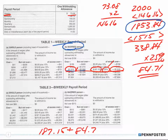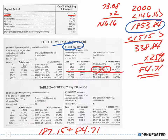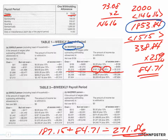So to recap: the base amount withheld is $187.15 on the $1,515, and the overage tax is $84.71. Adding those together — $187.15 plus $84.71 — equals $271.86. That is the amount of federal withholding, and that's the answer for question number five.